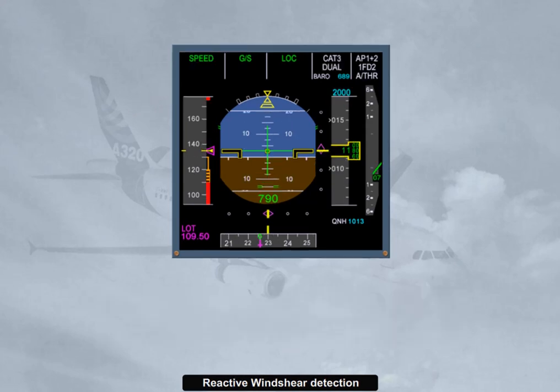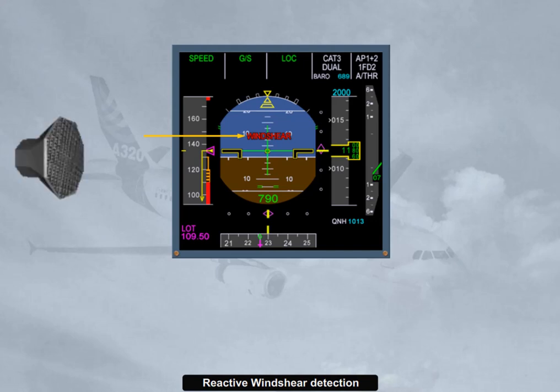If the aircraft encounters wind shear conditions detected by the FAC, a red wind shear message is triggered for a minimum of 15 seconds on both PFDs, associated with an aural warning: 'wind shear, wind shear, wind shear, wind shear.' This reactive wind shear warning is available from 3 seconds after lift-off up to 1,300 feet at take-off, and from 1,300 feet down to 50 feet during landing, and with at least CONF1 selected.